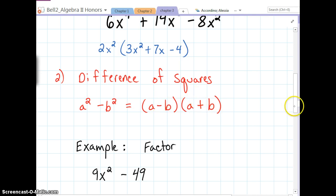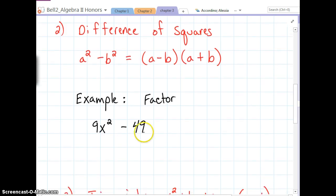It doesn't matter the order as long as they're opposite. So if we wanted to factor 9x squared minus 49, what you're thinking about is 9x squared is a perfect square because we can write it as 3x squared. That's technically my a value.